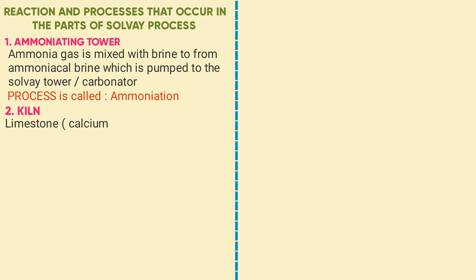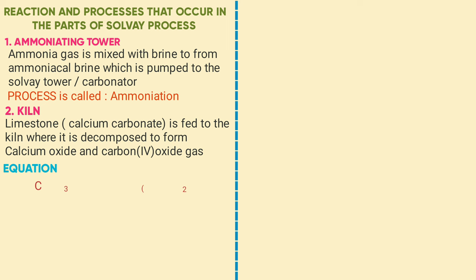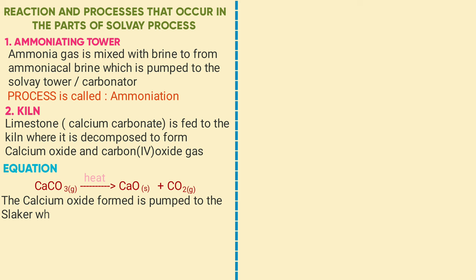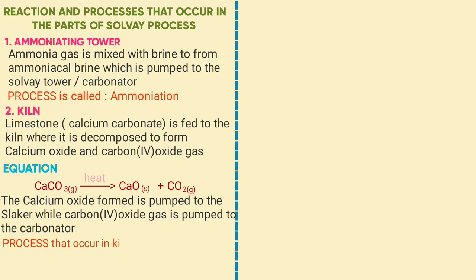Part two: the kiln. Limestone, which is calcium carbonate, is fed into the kiln where it is decomposed to form calcium oxide and carbon dioxide. The equation is: CaCO₃ (solid) → CaO (solid) + CO₂ (gas). The calcium oxide formed is pumped to the slaker, while carbon dioxide is pumped to the carbonator. The process that occurs in the kiln is called thermal decomposition.